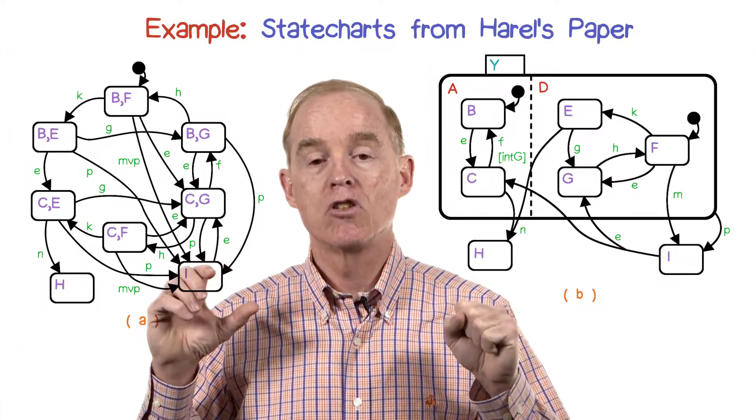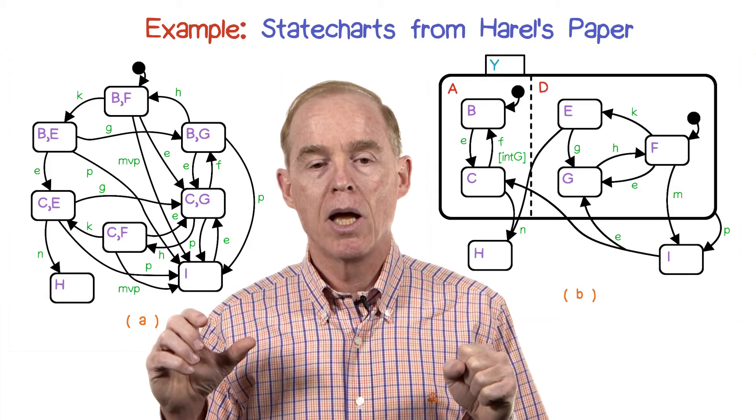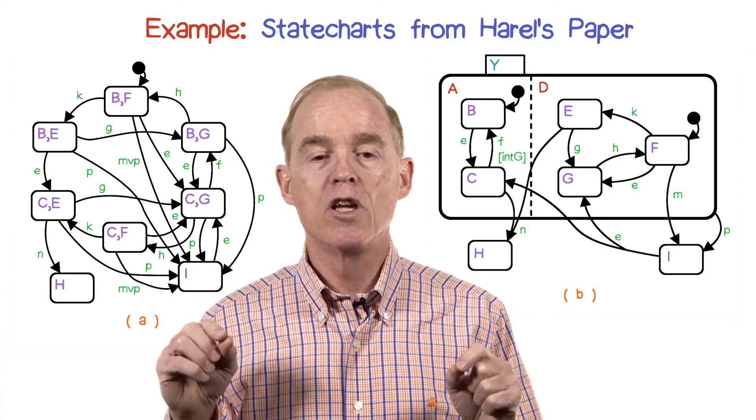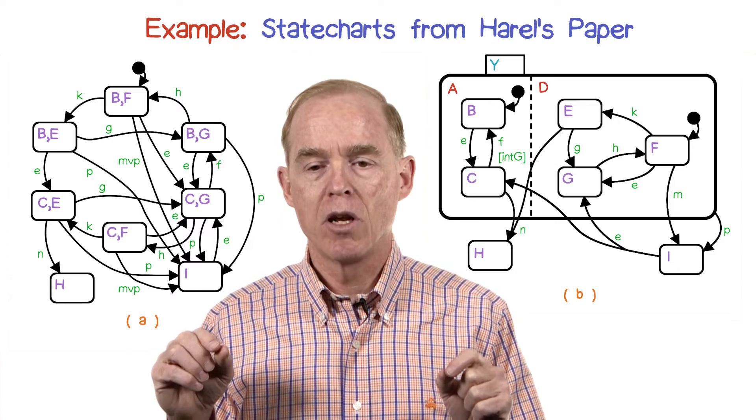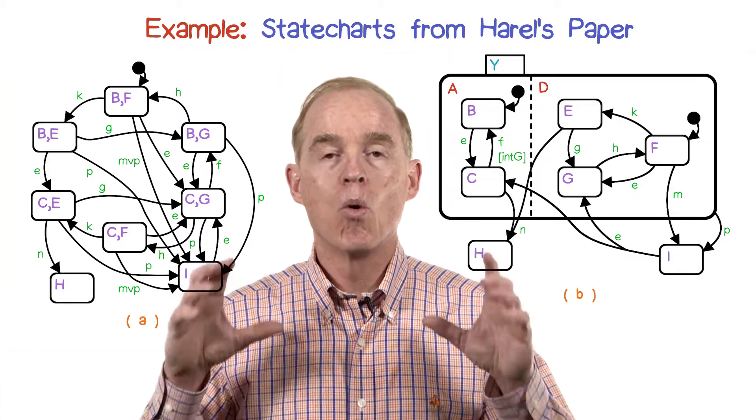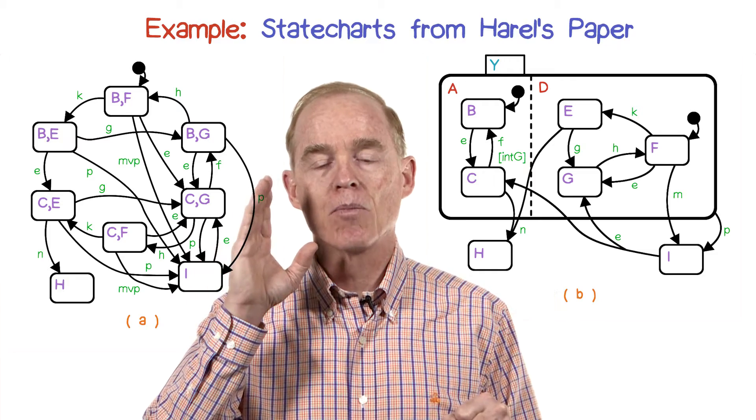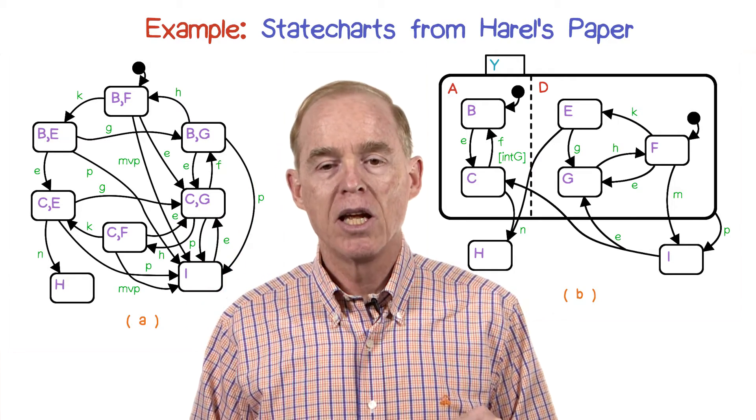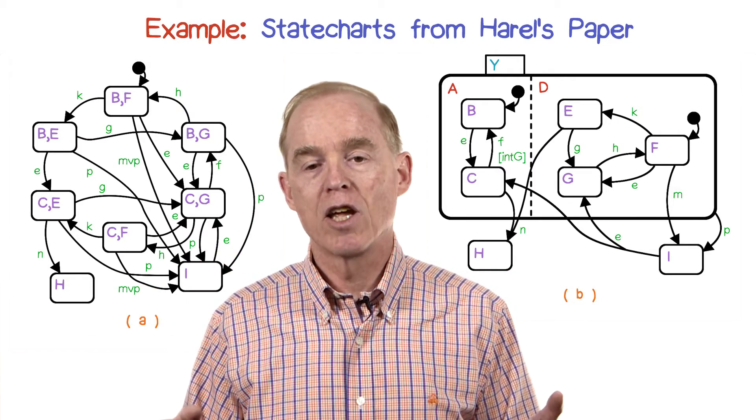Harrell has replaced this jumble by one major state labeled Y and left two of the original states, H and I, to interact with it. The Y state has that dashed line indicating concurrent actions that are taking place.